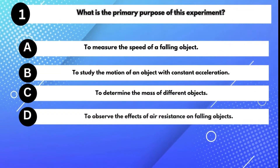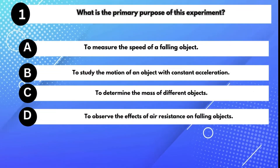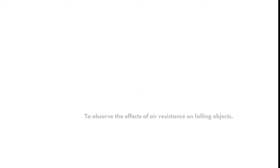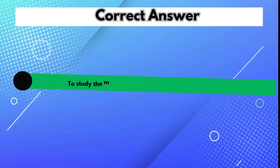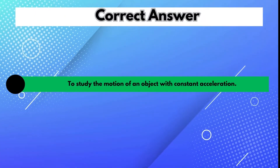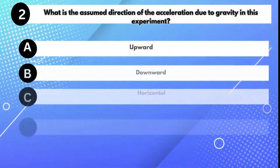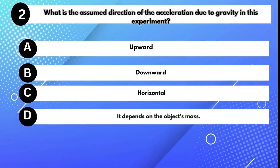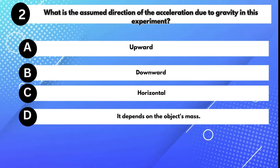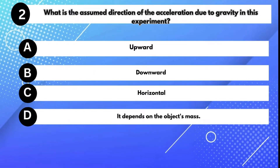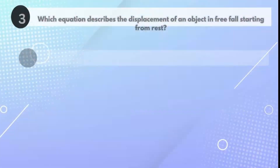What is the primary purpose of this experiment? Answer B: To study the motion of an object with constant acceleration. What is the assumed direction of the acceleration due to gravity in this experiment? Answer B: Downward.